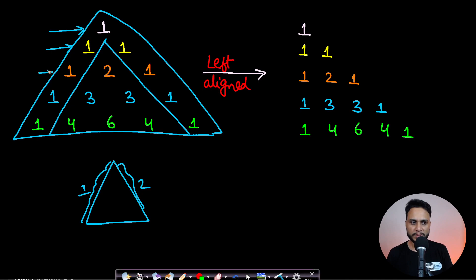When we start from the third row and fill the internal elements, you will see that this two is the sum of the left and right elements. This three is the sum of one and two, this three is the sum of two and one. Similarly, this four is the sum of one and three, this six is the sum of three and three, and this four is the sum of three and one.